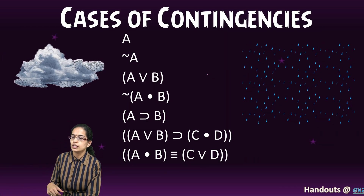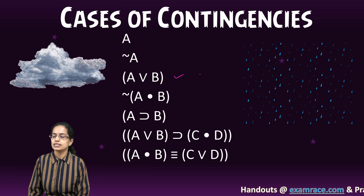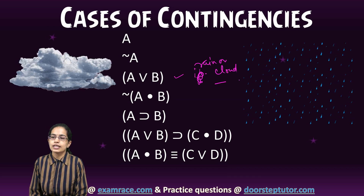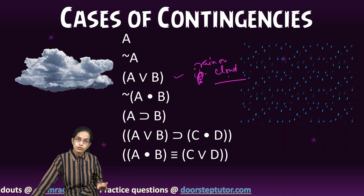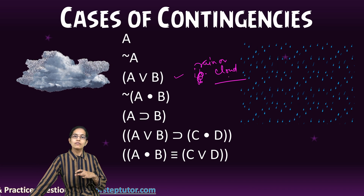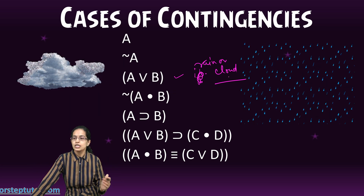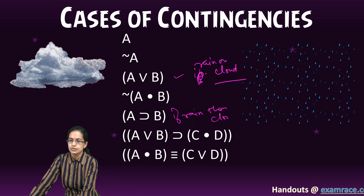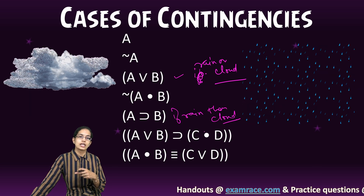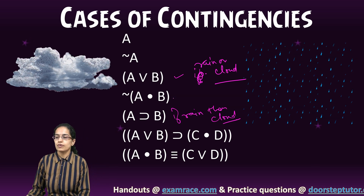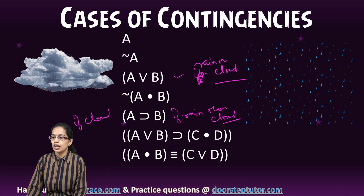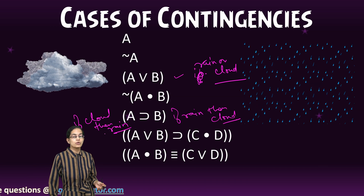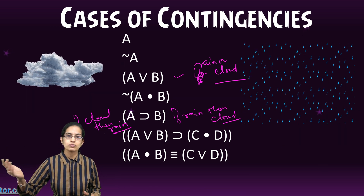More contingency cases: 'rain or cloud' can sometimes be correct, sometimes false. 'If rain then cloud' can be sometimes true, sometimes false. Similarly, 'if cloud then rain' can be sometimes true, sometimes false — because there could be clouds but no rain, or rain but no cloud.